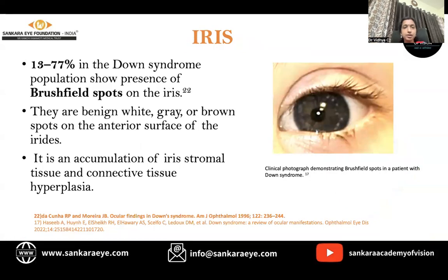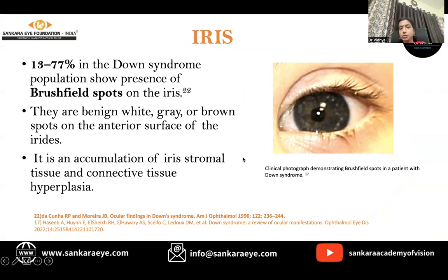Iris abnormalities, especially Brushfield spots, are found in about 13% to 77% of individuals. Brushfield spots are benign white, grey, or brown spots on the anterior surface of the iris, due to accumulation of iris stromal tissue and connective tissue hyperplasia.